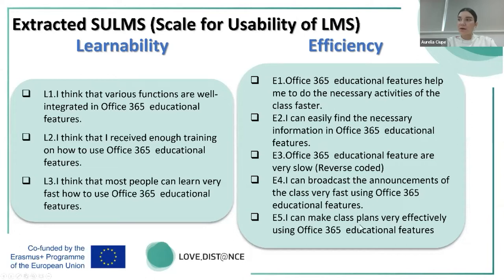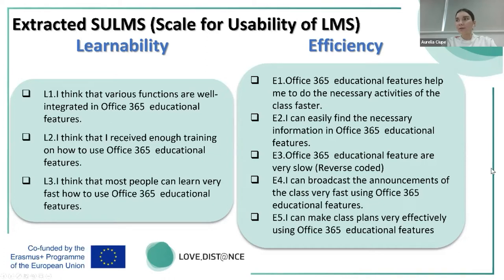In terms of efficiency, we refer to specific necessary activities and how these functionalities support those activities — whether there is enough information in the system to support educational features, and whether features are slow, which is a performance assessment at system level. One component reflects the communication approach and the way the system can be used for productivity purposes such as calendars and task lists. Some platforms do not accommodate such functionalities out of the box, so SUS needs to be applied to the specific environment used at institutional level.